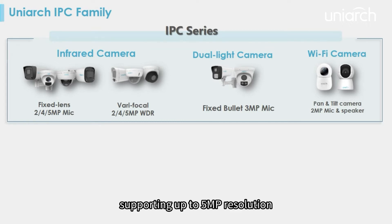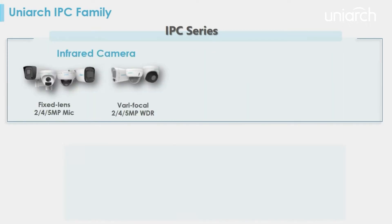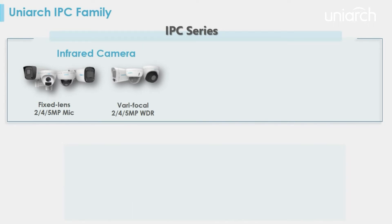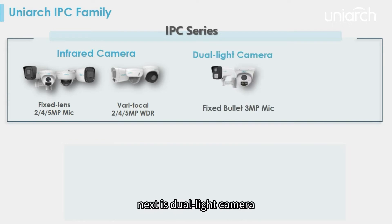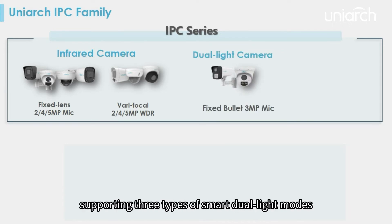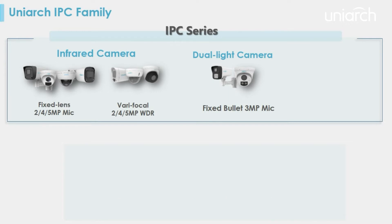The first sub-series is the infrared camera, which has fixed lens and varifocal cameras. Next is the dual light camera — it has four built-in warm lights and two infrared lights, supporting three types of smart dual light modes and up to 50 meters of supplementary light distance.